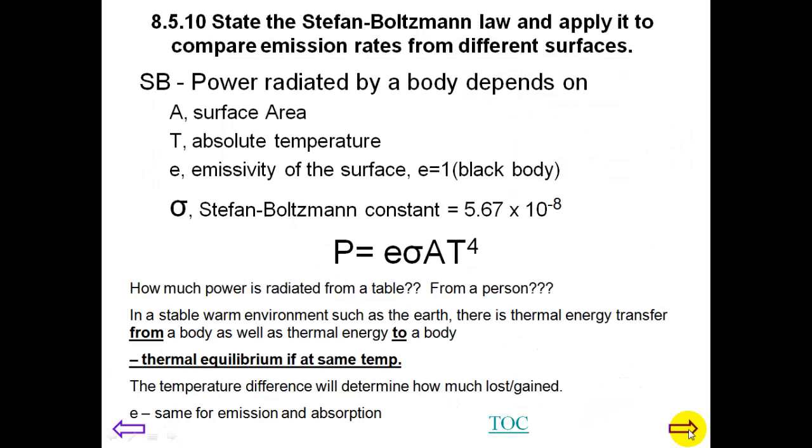So state the Stefan-Boltzmann law and apply it to compare emission rates from different surfaces. So we look at this Stefan-Boltzmann, it says it depends on the area, temperature, E, and the Stefan-Boltzmann constant. How much radio power is radiated from a table or from a person?